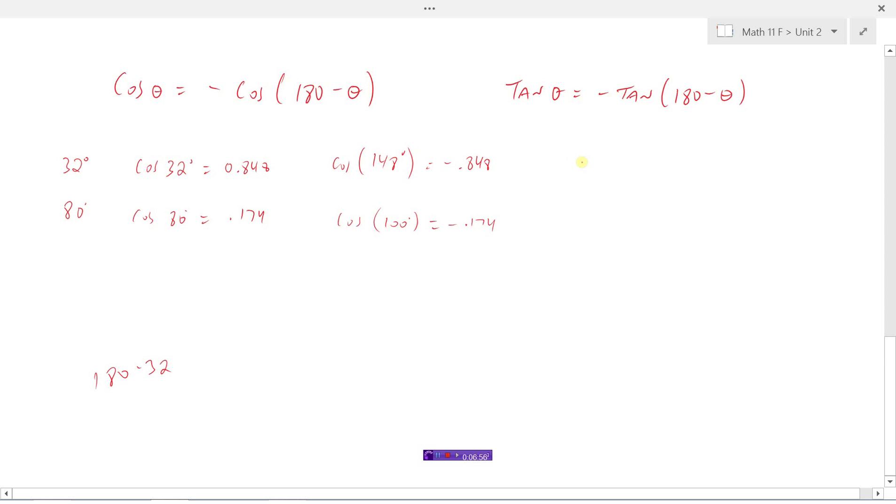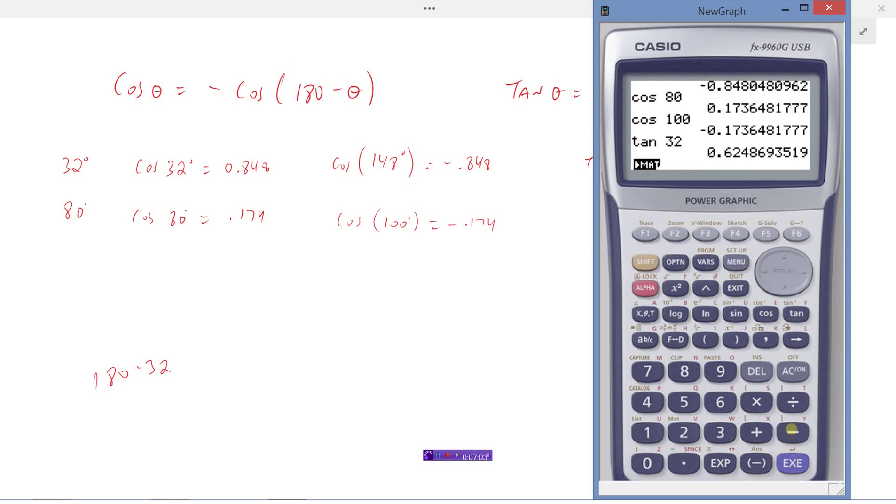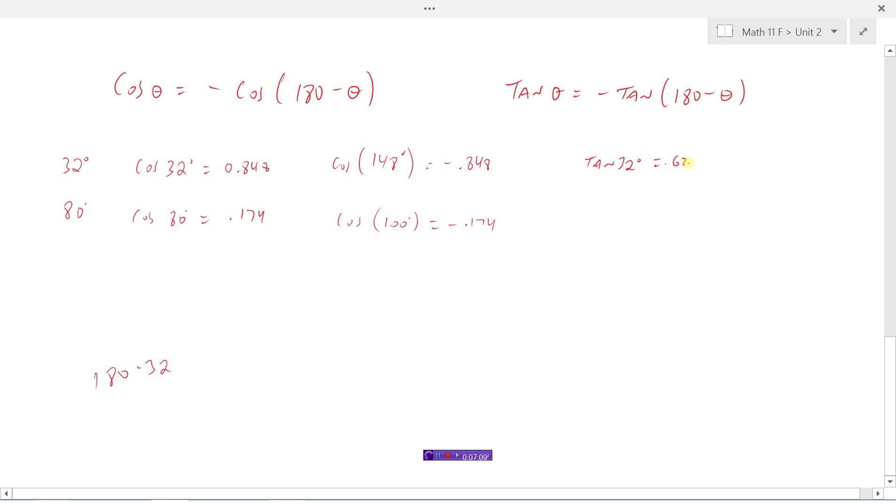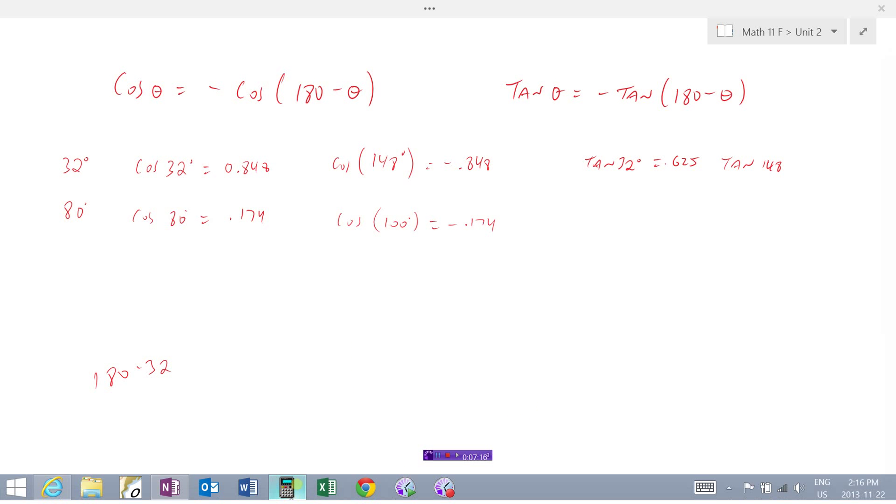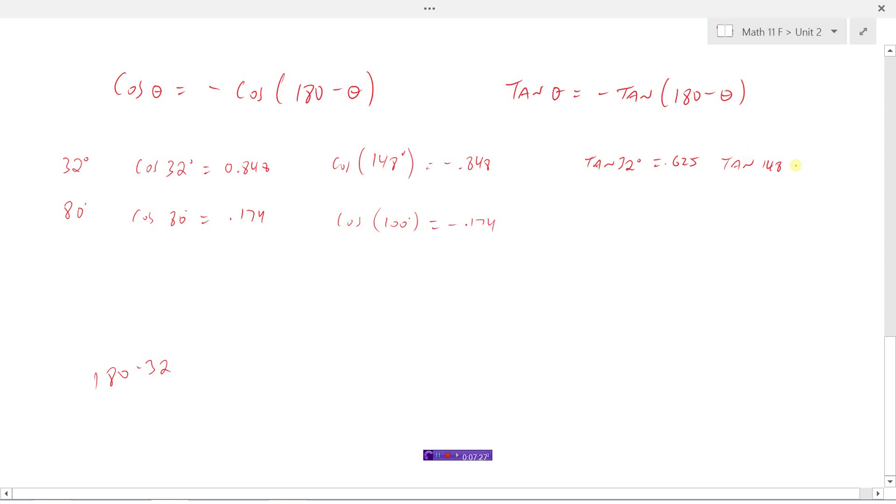And the same thing should be true with tangent. If we tried the tangent of 32 degrees, 0.625. Let's try the tan of 148, which would be 180 minus 32. And we get the exact same ratio, but with a negative in front, negative 0.625. I won't try the other one here, but it would obviously be true as well.